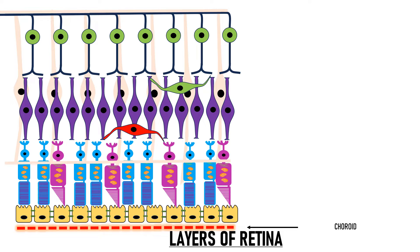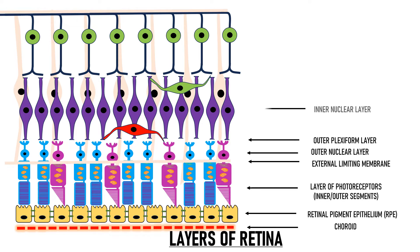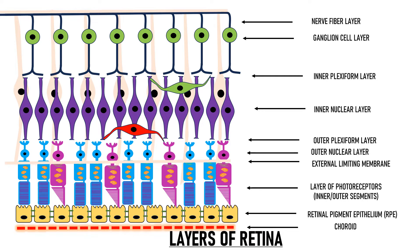This is the choroid, and the layers of retina from outside to inside are: the retinal pigment epithelium, layer of photoreceptors, external limiting membrane, outer nuclear layer, outer plexiform layer, inner nuclear layer, inner plexiform layer, ganglion cell layer, then the nerve fiber layer, and the innermost layer is the internal limiting membrane. Anterior to the internal limiting membrane lies the vitreous cavity, which is filled with vitreous humor.